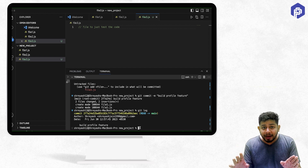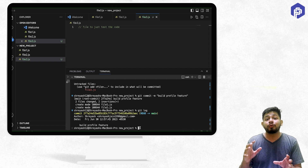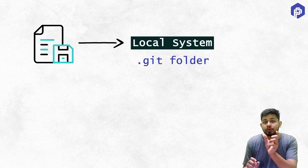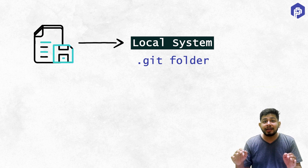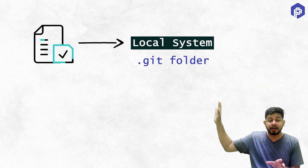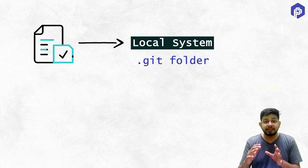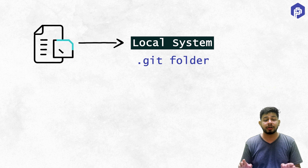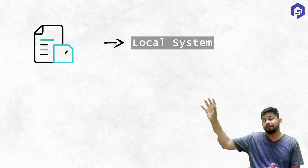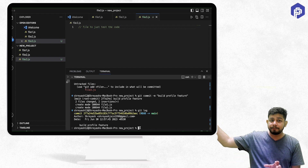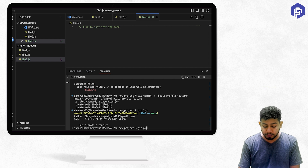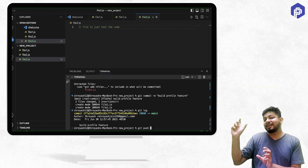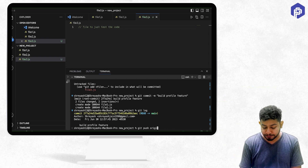Even though I created this commit or snapshot, I am still working on my local system — my laptop. Only my local system knows about this. The .git folder gets updated to record the new snapshot, but GitHub does not know anything yet. Only my local system knows this is a new version of the code. The new changes and version information are with my local system, not with the remote repository on GitHub. To send this code to GitHub, I need to use the command 'git push' followed by the address of the remote location.